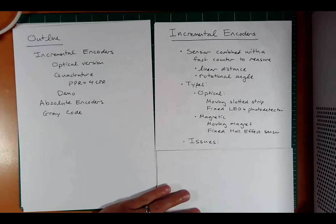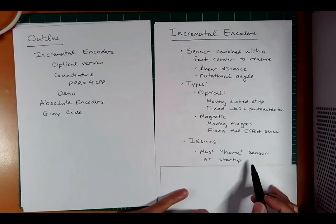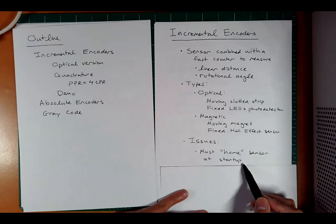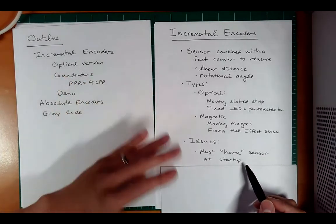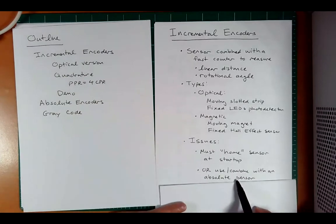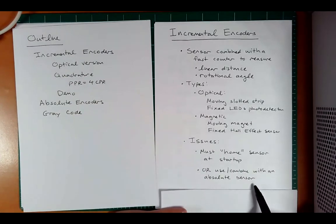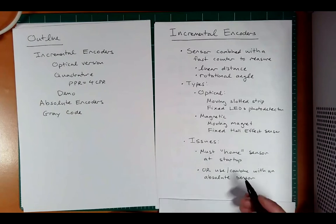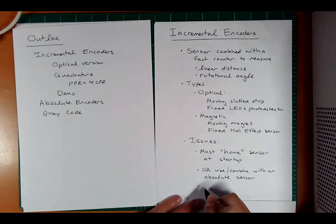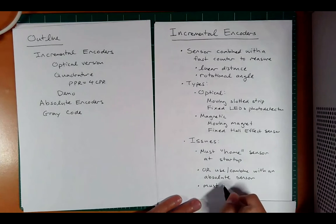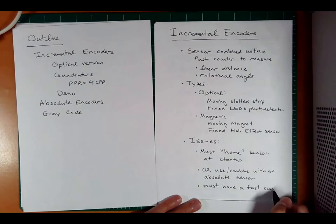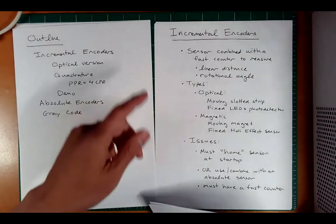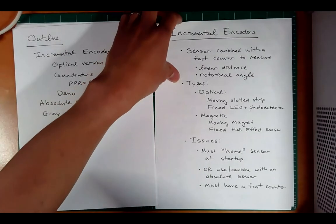So what are some issues with an incremental encoder? Well, you must home the sensor at startup. So you don't know the absolute position. Once you start it up, it's always zero, and so that could be a problem. So what do you have to do? You have to combine it with an absolute sensor. And in fact, another thing we should mention for incremental is you must have a fast counter. If your electronics is not fast enough to count the revolutions as it goes around, you're going to skip heartbeats.